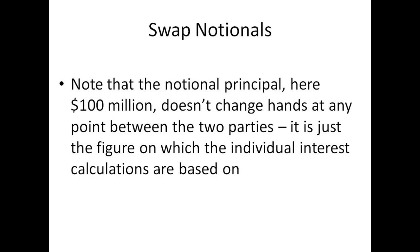An important point about swap notionals: the notional principal — in our example, $100 million — does not change hands between the two parties at any point. It's simply the number needed to calculate the size of the payments. When we say one party is paying 4% fixed, that's 4% of the notional principal of $100 million. It's just the figure on which the individual interest rate calculations are based.